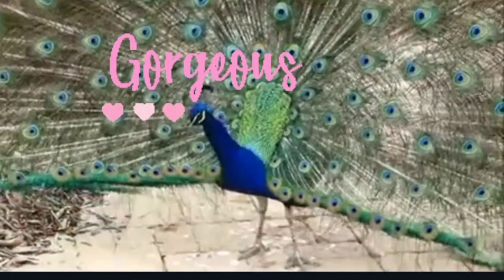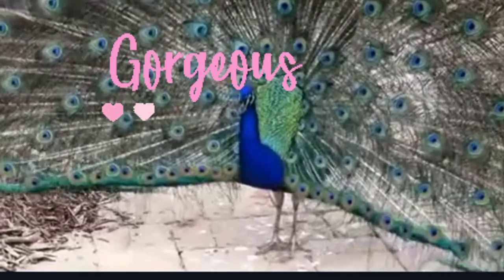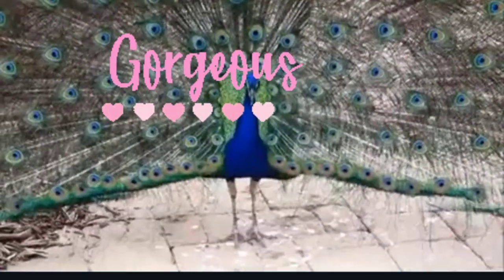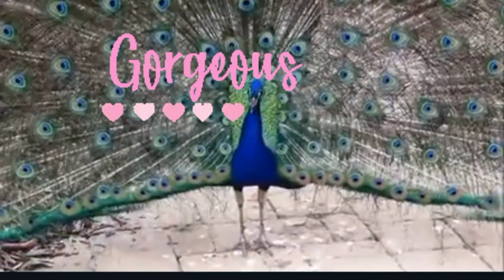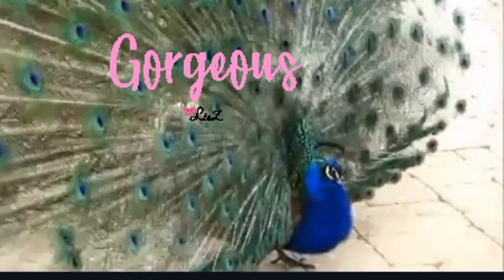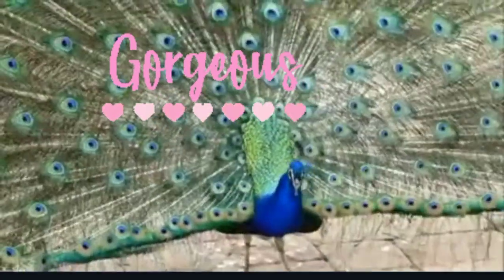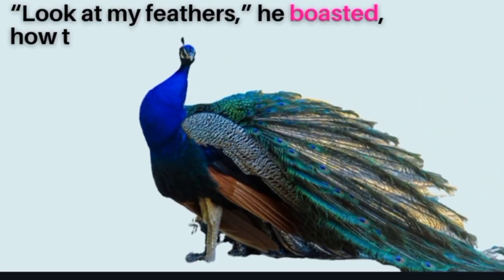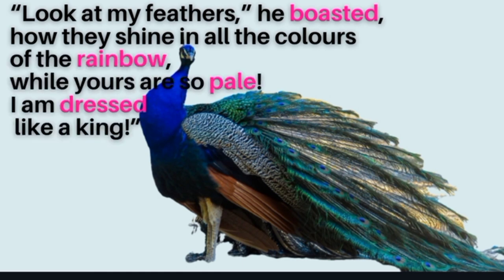After spreading his beautiful feathers, the peacock says something to the crane. He boasted — 'boasted' means to show off — 'Look at my feathers, how they shine in all colors of the rainbow. Yours are so pale. I am dressed like a king.'